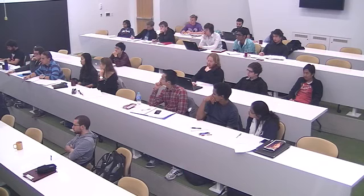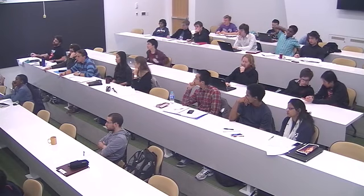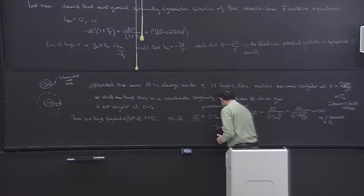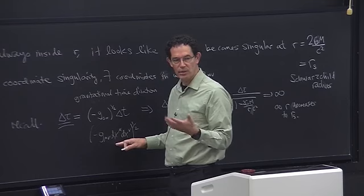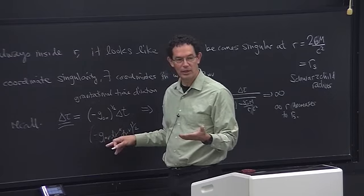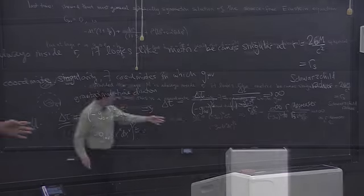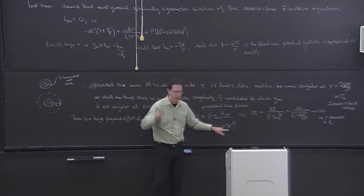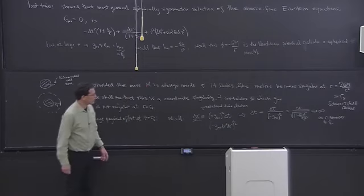The prediction is that if an object has collapsed inside its Schwarzschild radius, you would see an infinite gravitational redshift of radiation emitted from that surface. This formula is coordinate independent: δτ = √(g_μν dx^μ dx^ν). When I write this in other coordinates, I just identify whose time it is. It's also valid if somebody is moving — their velocity contributes through the dr terms. It's a completely general formula.